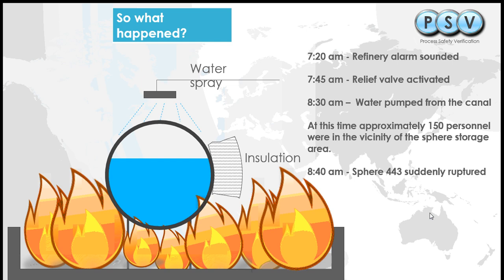The relief valve opened at 7:45 — 25 minutes to heat up — with the relief valve most likely cycling open and closed, as it contained the pressure, maintaining it at 110% as given by the European codes. At 8:30 they connected to the local canal, gaining more water to fight the fire. Approximately 15 extra hoses were brought in and the water supply was more fully engaged. Interestingly, those hoses were not directed towards the actual sphere that was on fire.